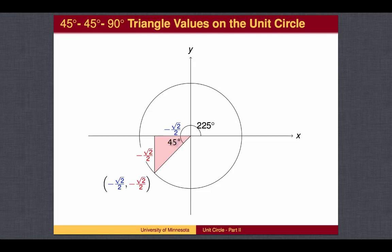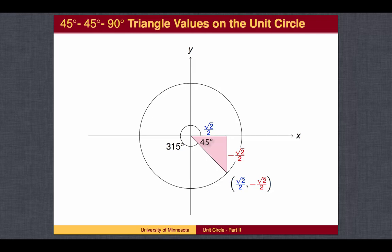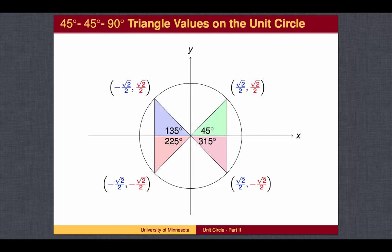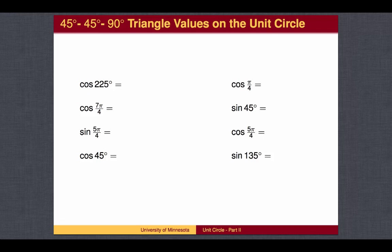At 225 degrees, we are in the third quadrant, so both the cosine and sine are negative. At 315 degrees, the cosine is positive but the sine is negative. Here are all four angles. We can convert the degree measures to radians. To test your understanding, try these problems.